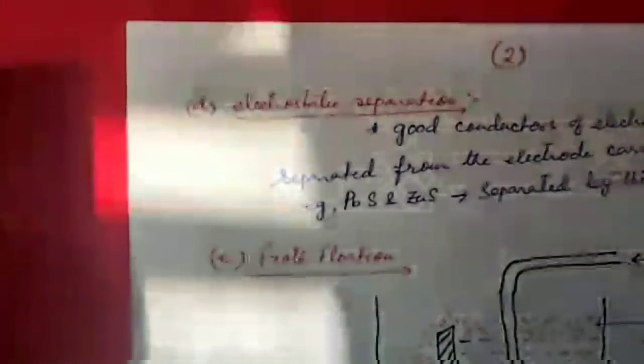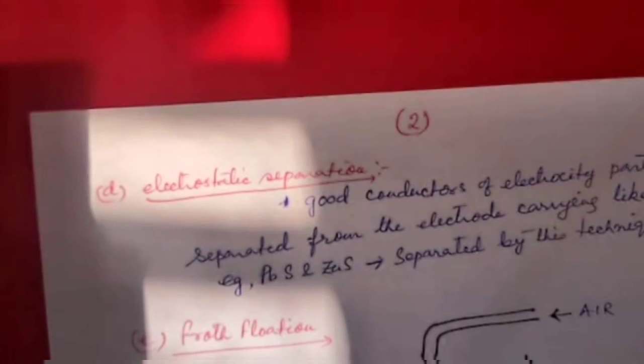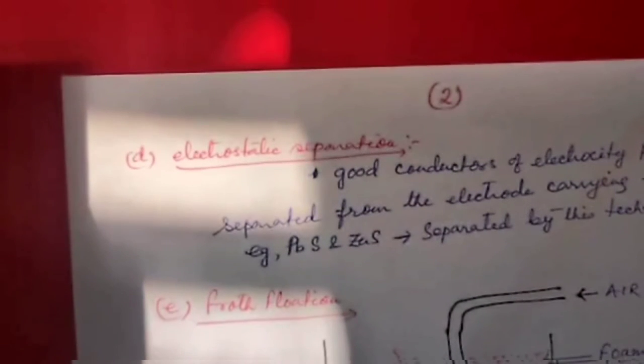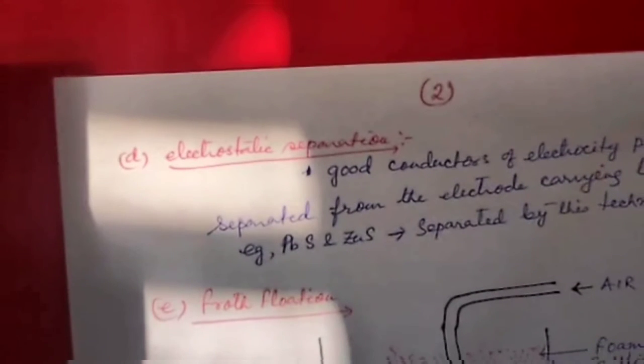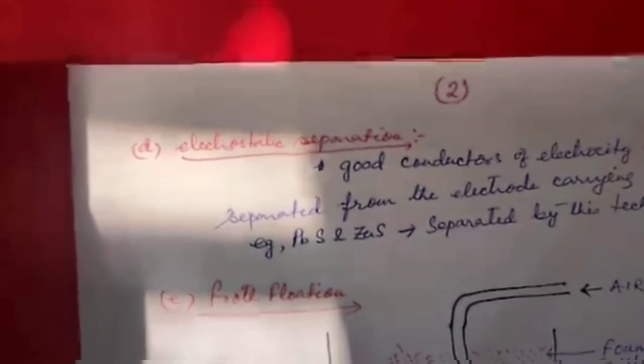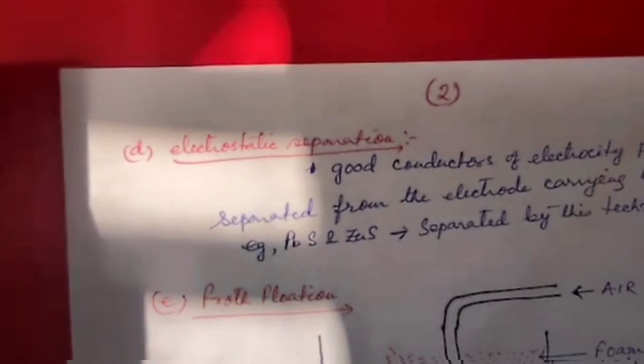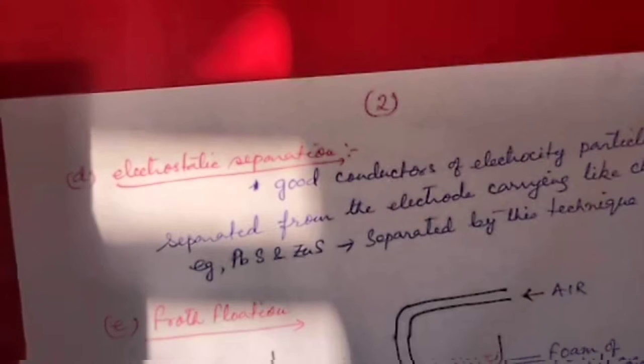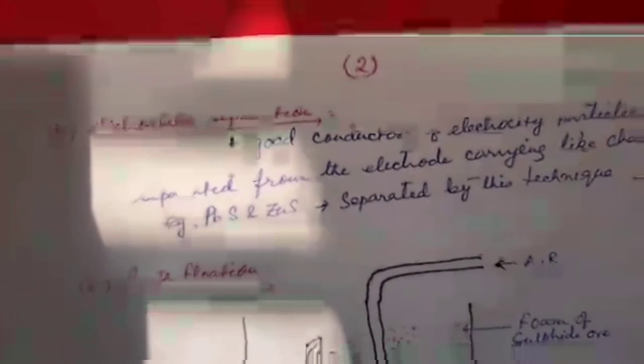Electrostatic separation: In this method, the particles which are good conductors of electricity become electrically charged as soon as they are brought into an electrostatic field and are consequently repelled by the electrode carrying like charges. Galena and zinc blende which occur together in nature are separated by this technique.